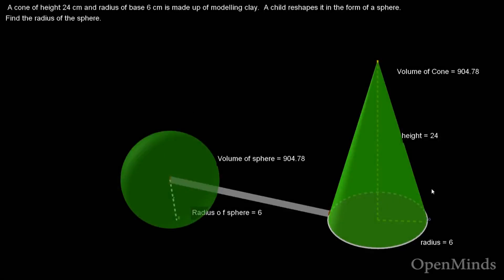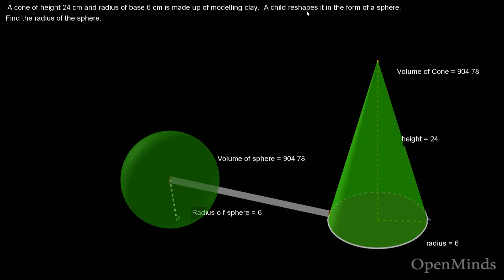Let's talk about how to convert one solid into another solid. In this example, we have a cone and we're going to convert it into a sphere. The question says: a cone of height 24 centimeters, volume 904.78, and radius 6 centimeters. A child is reshaping it to form a sphere.